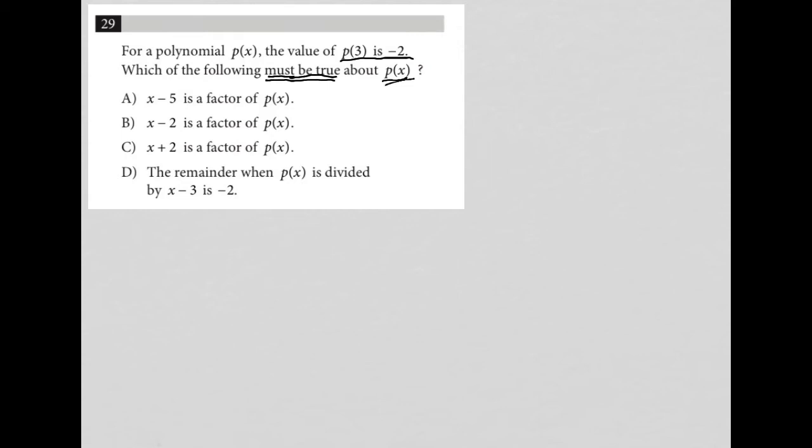So what do we know? We know that P of 3 equals negative 2. And what does that mean? That means that when X equals 3, Y equals negative 2. And this is a very important understanding. So this P of 3, P of X, F of X, G of X, any of those function notations that you see on this test, I like to just completely get rid of them in my mind and think of them as just Y. So when the X part is 3, then the solution or Y is equal to negative 2.